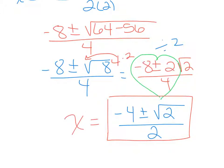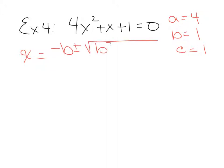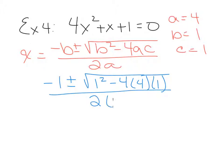Example 4: solve using the quadratic formula, 4x² plus x plus 1 equals 0. Make sure your equation equals 0 and terms are in descending order. Assign A equals 4, B equals 1, C equals 1. Write the formula: x equals negative B plus or minus the square root of B squared minus 4AC, all over 2A. Substituting: negative B plus or minus the square root of B squared minus 4 times A times C, over 2 times A.